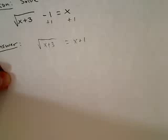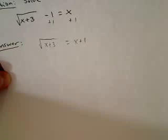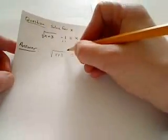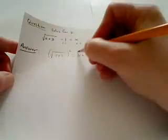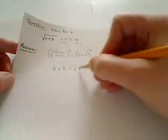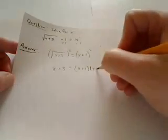In this case, in order to get rid of the radical, I would square both sides. That gets rid of the radical on the left, but on the right, then I have to use the distributive property. So if I square both sides, on the left we get x plus 3, and on the right we get x plus 1 times x plus 1.